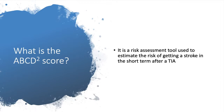TIA means transient ischemic attack. It's basically the same manifestations as a stroke, however it lasts less than 24 hours. So you have symptoms of a stroke and then you recover within 24 hours — that's a TIA — and then you calculate how much is that person's risk of getting a subsequent stroke in the short term.